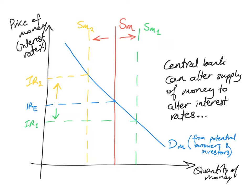Since the interest rate is the price of borrowing or the reward for saving money, like any price it is determined through demand and supply. The demand for money comes from potential borrowers and investors — people that want to borrow money. The supply of money is somewhat controlled and set by the central bank, which prints notes and coins and also sets a limit on how much banks can lend in terms of credit and deposits. At any point in time the supply of money is perfectly inelastic — a vertical curve. Where demand and supply intersect, this determines the equilibrium quantity of money (QME) and the equilibrium interest rate (IRE).